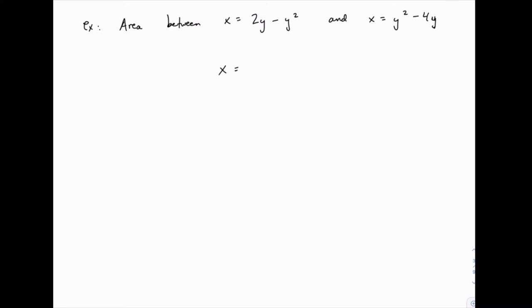So we have x equals 2y minus y squared. If we set that equal to 0, we can solve to find the y values where x is 0. In other words, we're going to find the y intercepts of this parabola. Now, if we factor out a y, we have y times 2 minus y equals 0, which means that y equals 0 or 2.